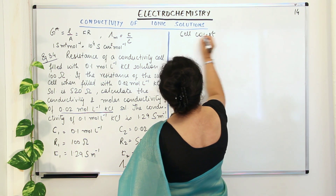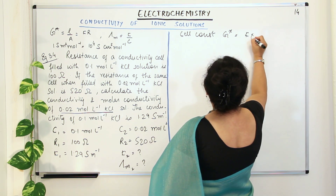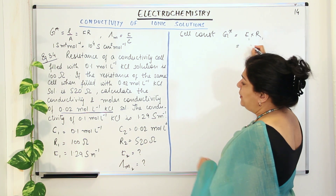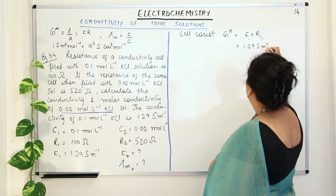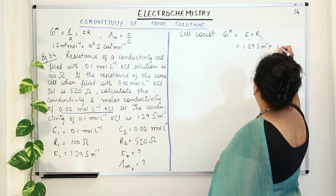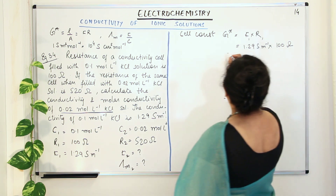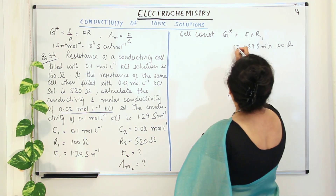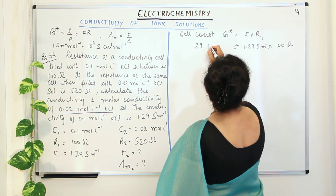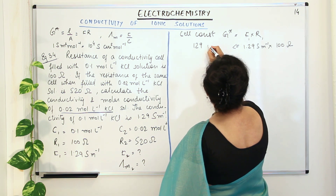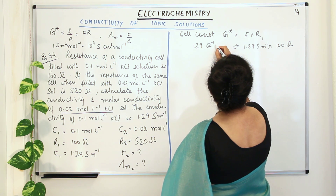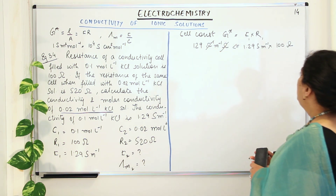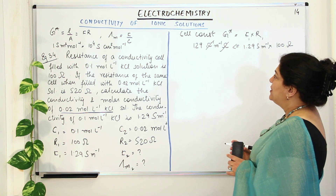The first step is to find the cell constant. g* = κ × R. Using kappa 1 and R1: g* = 1.29 S/m × 100 ohms = 129 per meter. Siemens is ohm inverse, so ohms cancel, leaving the unit as per meter. The cell constant is 129 m⁻¹.